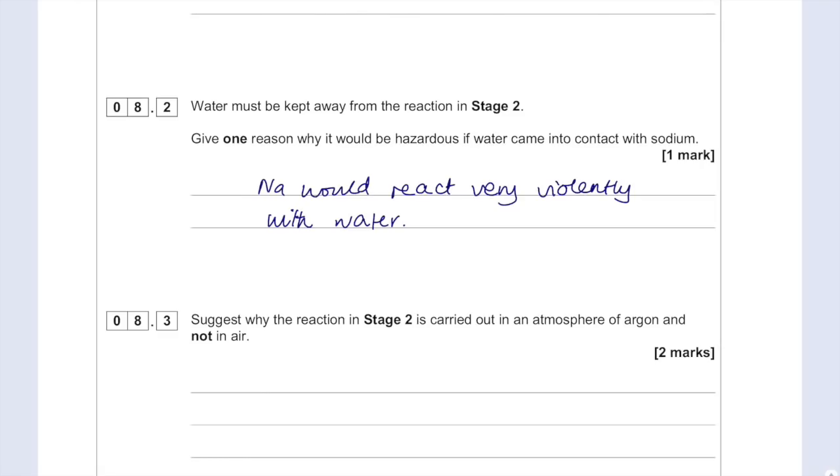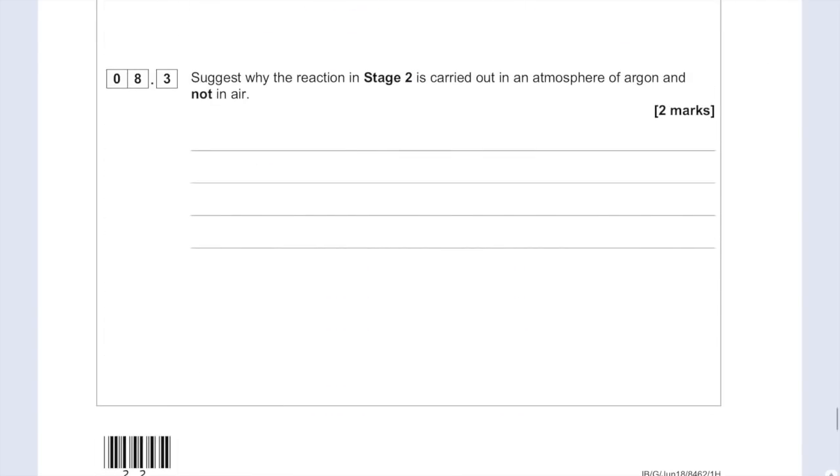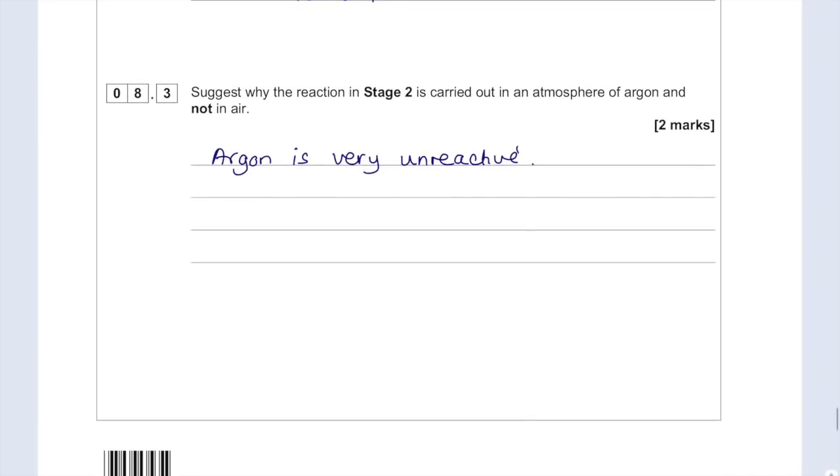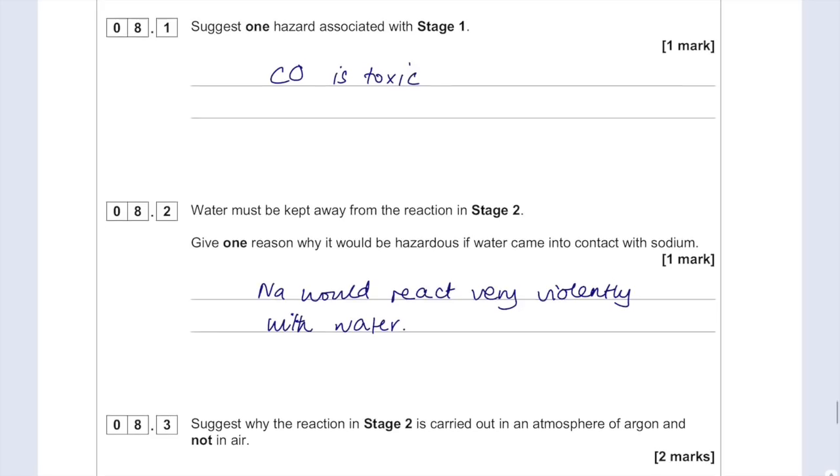Suggest why the reaction in stage two is carried out in an atmosphere of argon and not in air. Argon is a noble gas, so argon is very unreactive. Air contains oxygen, so oxygen would be reacting if we carried out this experiment in air.